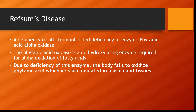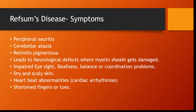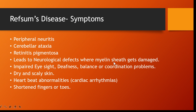Refsum's disease results from a defect in alpha oxidation of phytanic acid. The symptoms may include several neurological disorders, especially peripheral neuritis, cerebellar ataxia, retinitis pigmentosa, polyneuropathy. It will lead to neurological defects where myelin sheath will be damaged, impaired eyesight, deafness, balance or coordination problems, dry and scaly skin, heartbeat abnormalities, cardiac arrhythmias, and shortened fingers or toes.